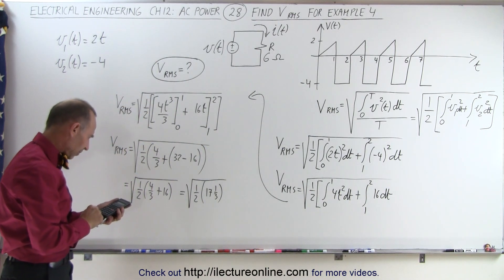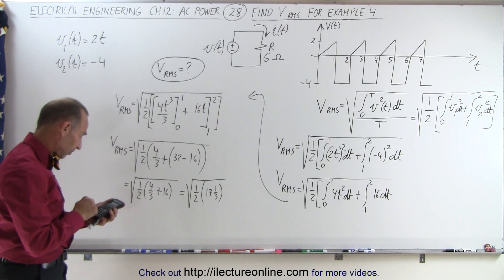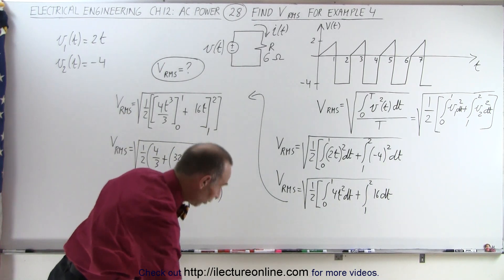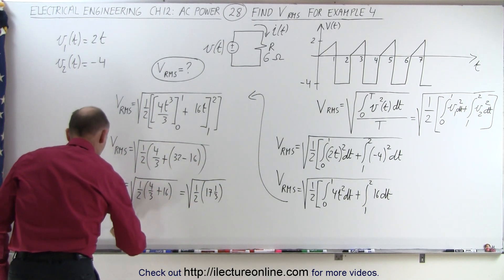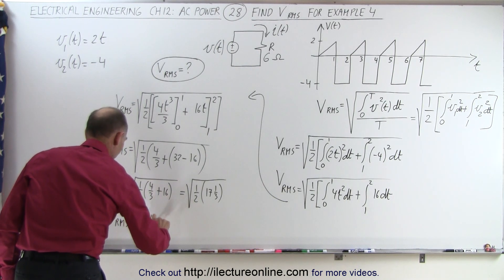So we have 4 thirds plus 16, divide by 2, and now take the square root, we get 2.94. So finally, VRMS is equal to 2.94 volts.